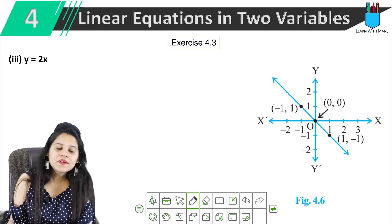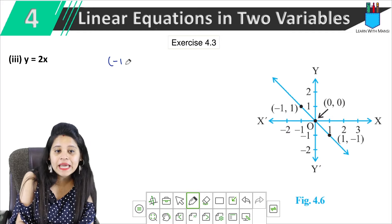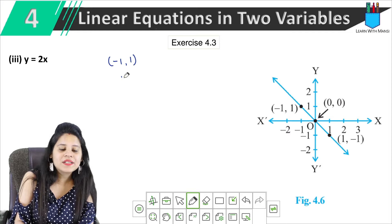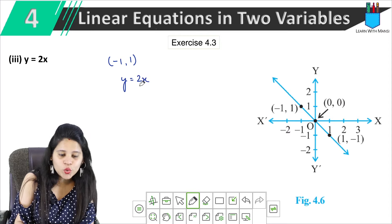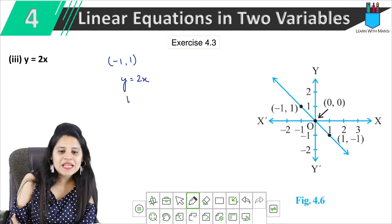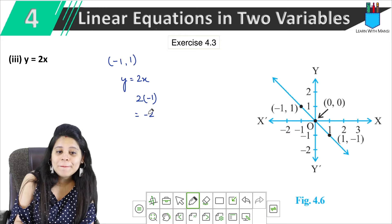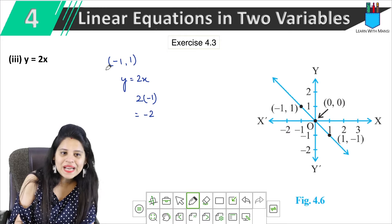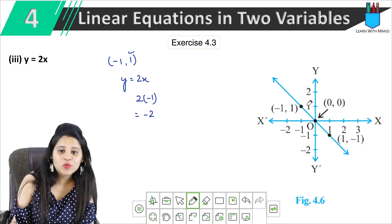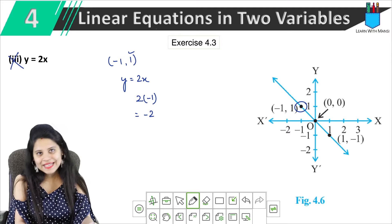Moving to the next part. The third equation is y equals to 2x. We use the same points. Taking the point (-1, 1): y is 1, and 2x gives 2 times minus 1, which is minus 2. Since 1 is not equal to minus 2, this point is not satisfied. So this graph is not y equals to 2x.